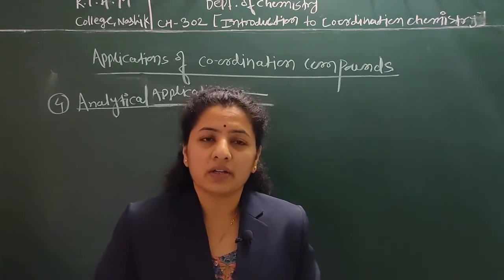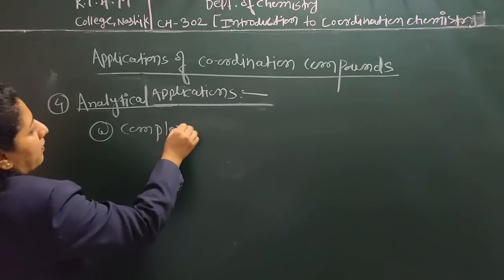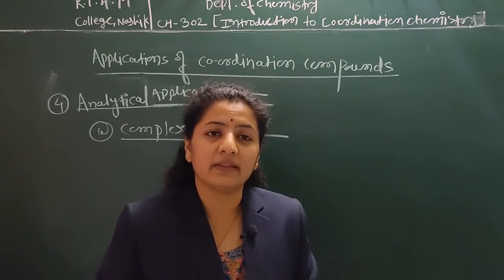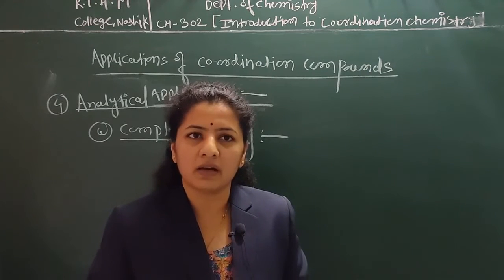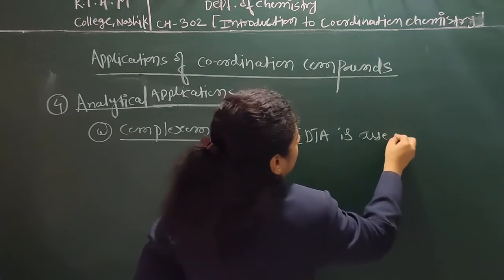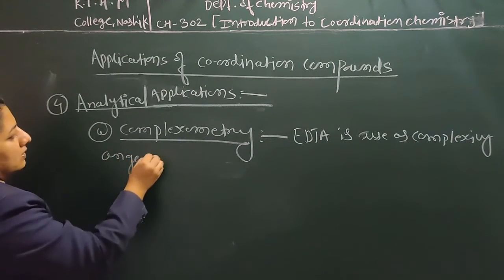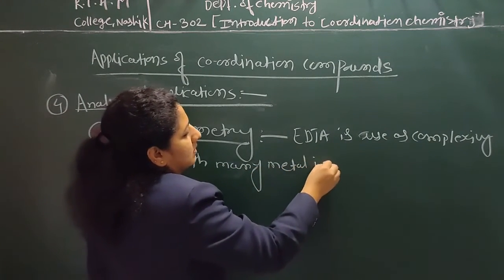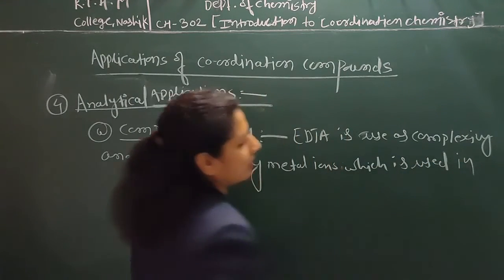In analytical applications, coordination compounds play a very important role in complexometry. EDTA is a chelating agent that can form complexes with at least 40 metal ions. If we use the proper pH and indicator, it is easy to estimate the metal from their respective solutions. EDTA is used as a complexing agent with many metal ions, which is used in the extraction and estimation of metals.